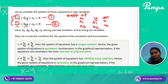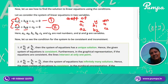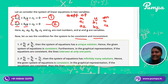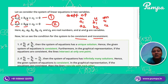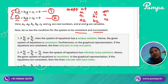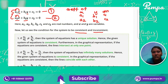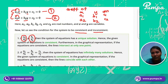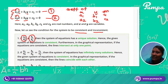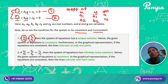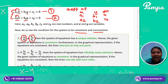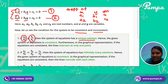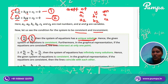So the solution exists depending on whether the system is consistent or inconsistent. First, check the coefficient ratio of x: A1 by A2, and coefficient ratio of y: B1 by B2. There are two possibilities. If A1 by A2 is not equal to B1 by B2, that gives a unique solution — the solution exists and is consistent.